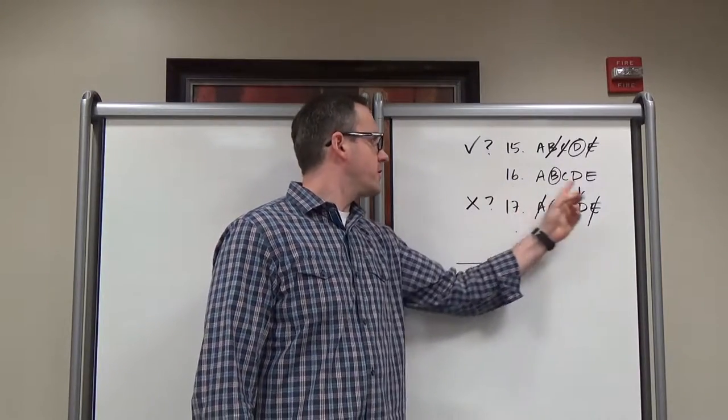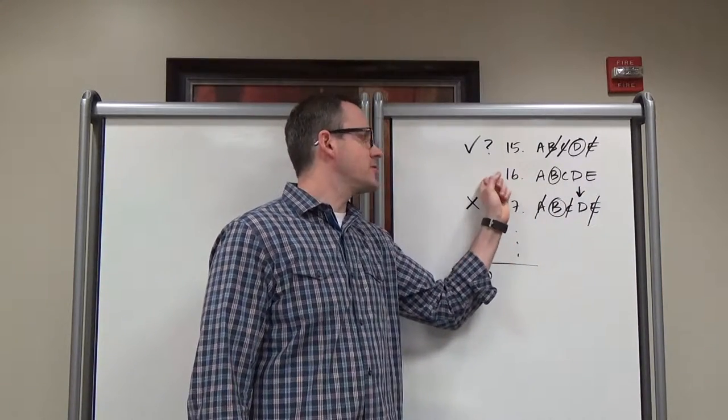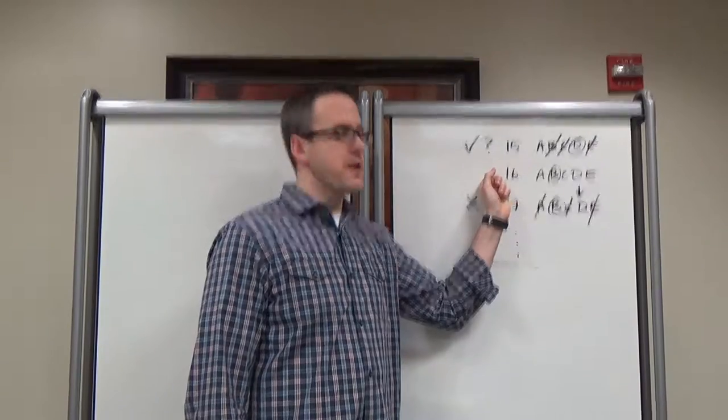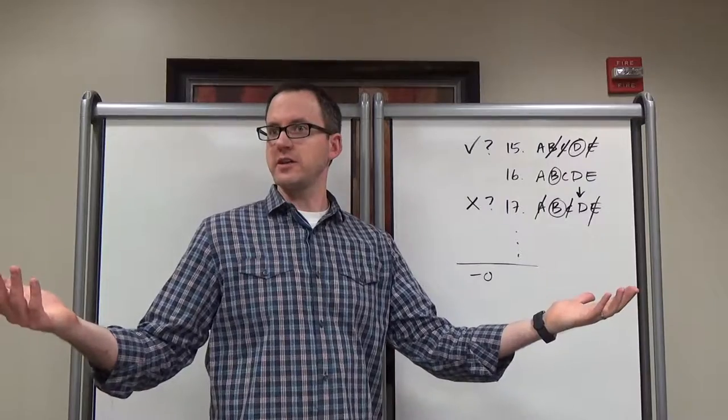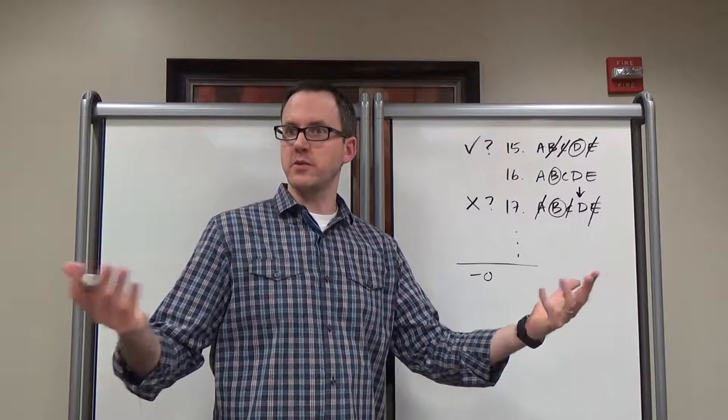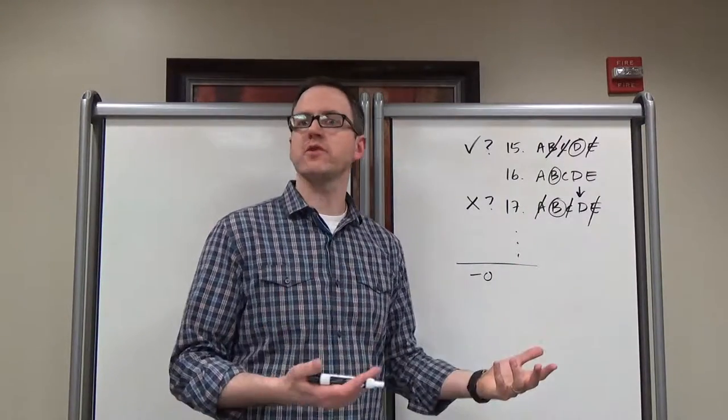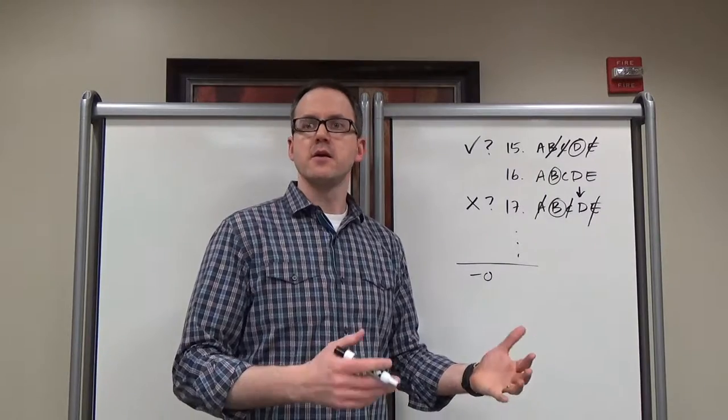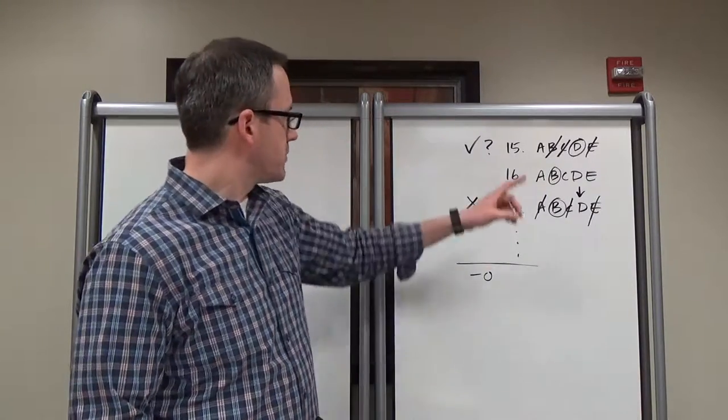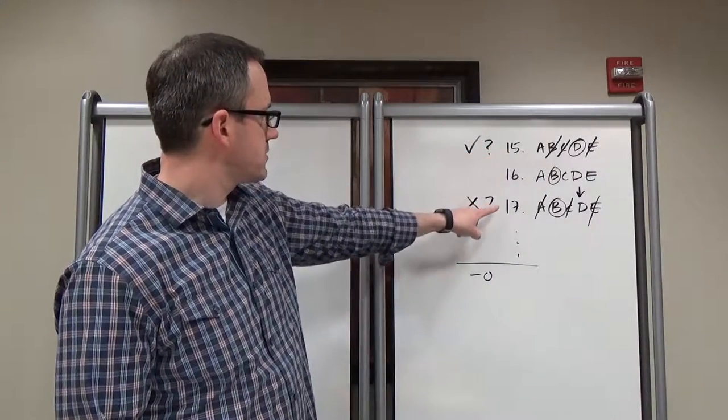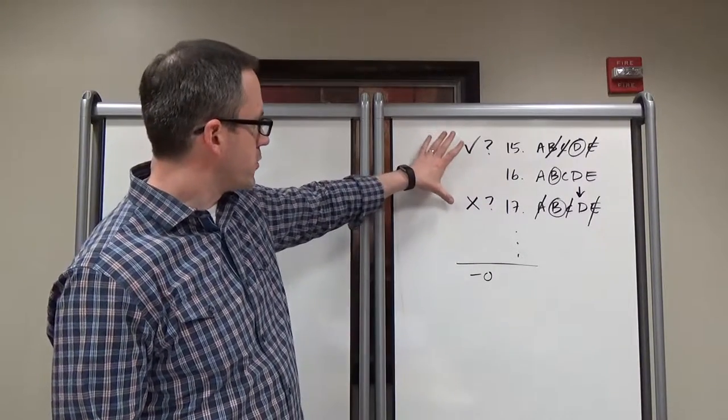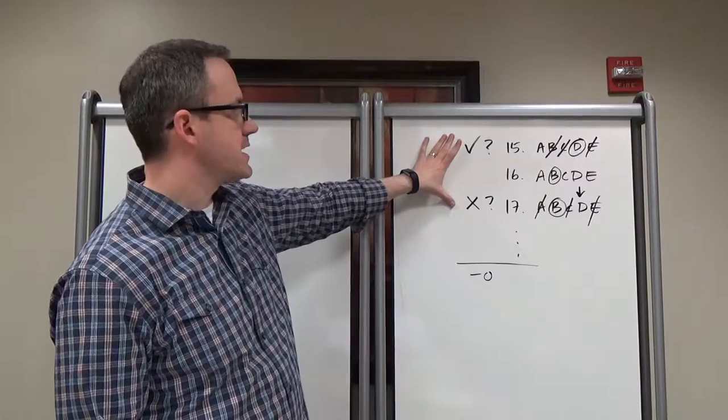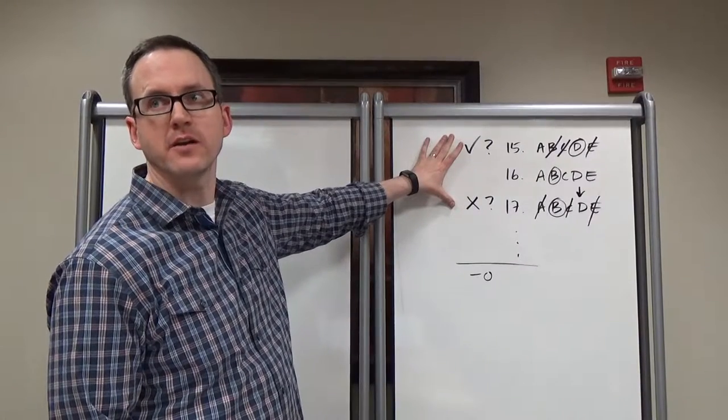Sometimes, you know, you felt good about 16, so much so that you didn't put a question mark next to it. But when you grade, it turns out that it was E. You're like, whoa, I felt good about that during the test, so I didn't put a question mark. But it turns out that I was wrong. You try to figure out what happened. Bottom line here, though, is that you're basically putting question marks next to the questions you're not sure about. And then you are affirming or denying the answer you chose after the fact before you grade.